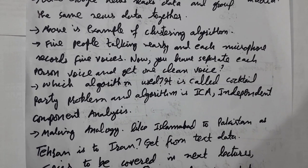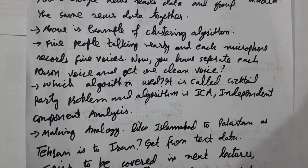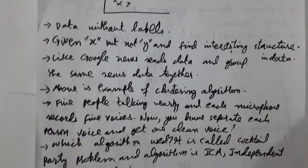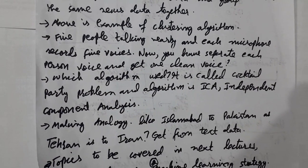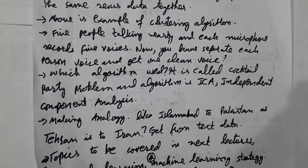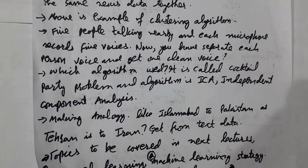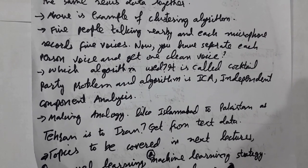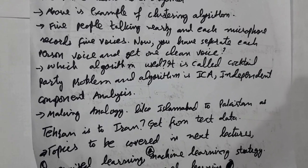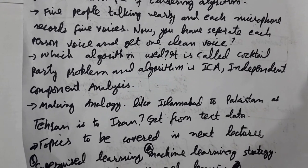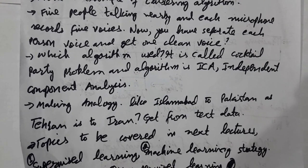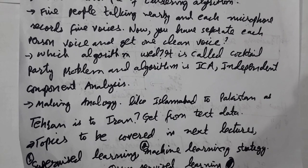This problem is called the cocktail party problem, and the algorithm used is ICA — Independent Component Analysis. The best unsupervised learning can also make analogies: for example, Islamabad is to Pakistan as Tehran is to — and I will not provide the answer. It gets text data from Google and fills in the blank: Iran. So I just provide 'Islamabad is to Pakistan as Tehran is to blank' and it provides the answer: Iran.